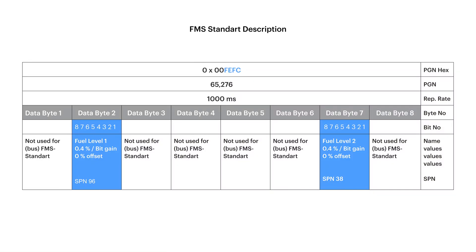To understand what information is in these symbols, let's open the FMS protocol description. The two bytes in the middle of the identifier — FE and FC — form the PGN. Now look at the SPN value in this PGN. SPN is the parameter number; it typically identifies fuel level, engine speed, or other quantitative indicators. In our case, SPN 96 is the fuel level.